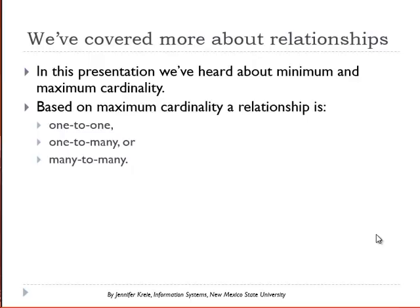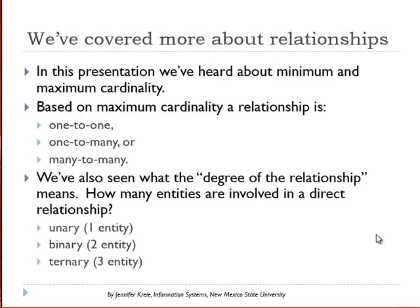We've talked about minimum and maximum cardinality. Based on the maximum cardinality, a relationship can be determined to be one-to-one, one-to-many, or many-to-many. The order in which you list them is trivial — you could say one-to-many or many-to-one. We've also seen that the degree of the relationship indicates how many entities are involved, and we have unary, binary, and ternary.